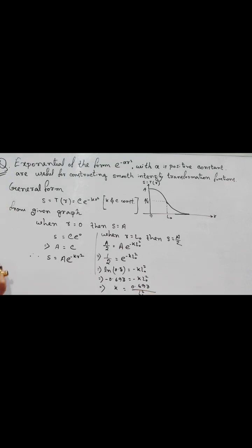Now, the transfer function, therefore, will be S equals to T of R equals to A, C has value A, e to the power minus K has value 0.693 divided by L0 square into R square. Final transfer function.